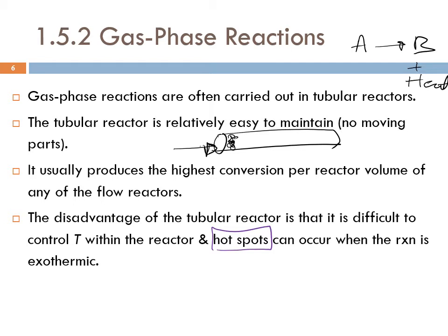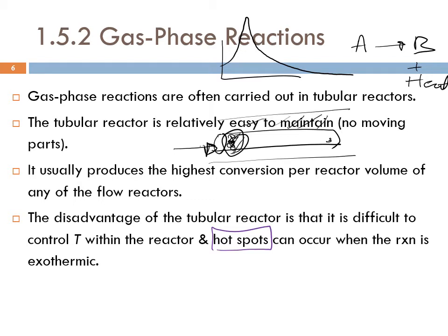High concentration of A at the inlet means a high rate of reaction, which means a high rate of energy release. The temperature goes up at the beginning and then decreases. Even with cooling, you may end up with a large temperature jump at the inlet because the rate of heat removal is very small compared to the rate of heat produced by the reaction due to the high reaction rate and the exothermic nature — resulting in a hot spot.